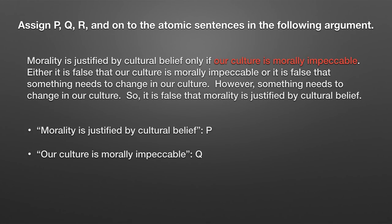Don't skip letters — go P, Q, R, S, T, U, V, W, and so on. We've got our variables for our first two atomic propositions. Now let's look at the next sentence. It starts with 'either,' which already tells us it's a disjunction. And we've got 'either it is false that,' so this should tell us right away we've got a disjunction of negations.